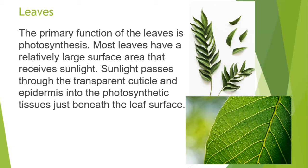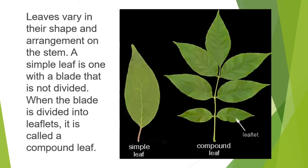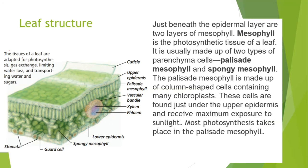The primary function of leaves is photosynthesis. Most leaves have a relatively large surface area that receives sunlight. Sunlight passes through the transparent cuticle and epidermis into photosynthetic tissues just beneath the leaf surface. Leaves vary in their shape and arrangement on the stem. A simple leaf is one with a blade that is not divided. When the blade is divided into leaflets, it is called a compound leaf.